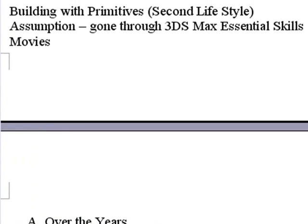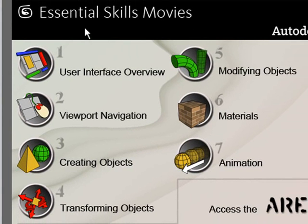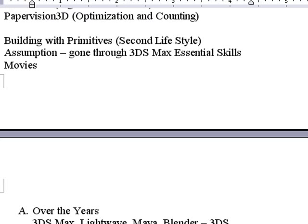My assumption here is that you've gone through the 3DS Max Essential Skills Movies. Whenever you open up 3DS Max, up comes the Essential Skills Movies, which address using the interface, viewport navigation, creating objects, transforming objects, modifying objects, materials, and animations. They're short — maybe one- to two-minute videos. If you've gone through those and played around with 3DS Max a little bit, you're definitely ready to start here.